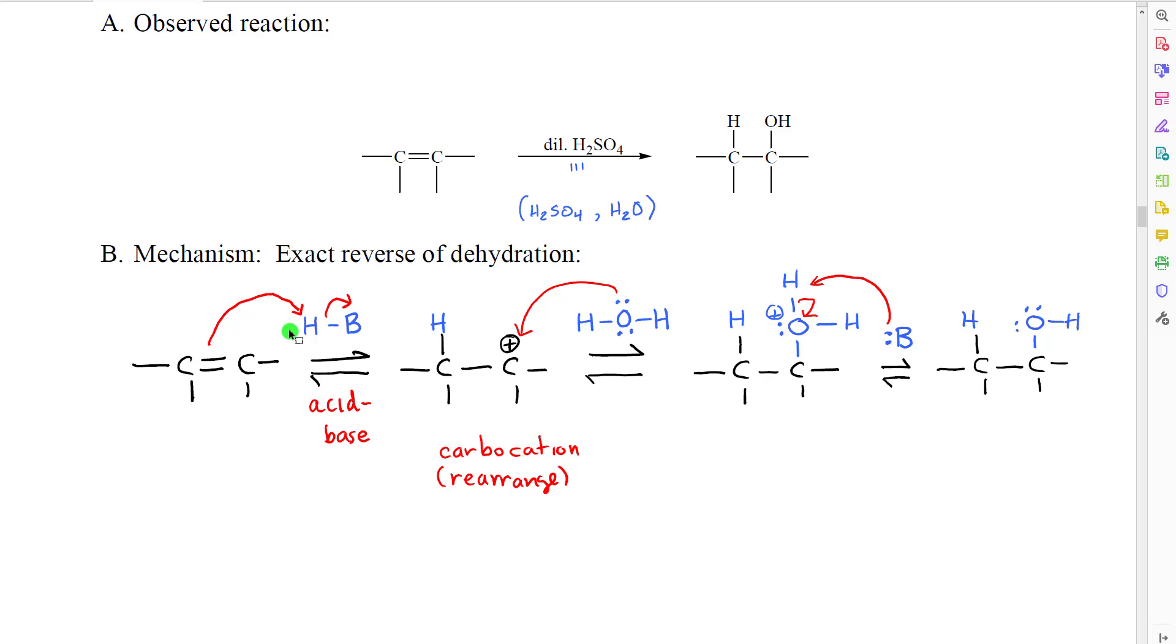When we break the double bond and make a bond to the hydrogen, we leave only three bonds on the other carbon, which therefore creates a carbocation, and rearrangements are very common in this reaction. So the carbocation would rearrange. In that case, the alpha carbon would change.